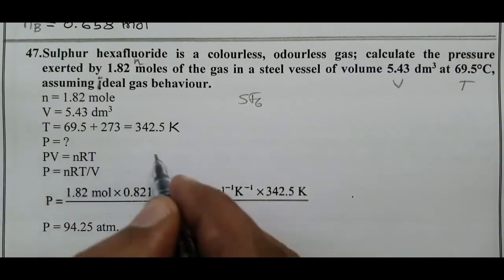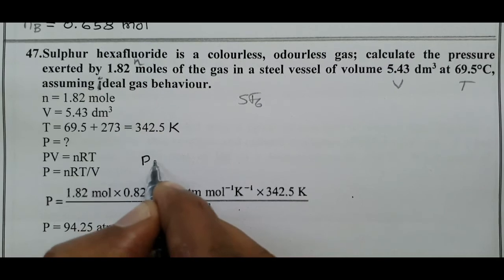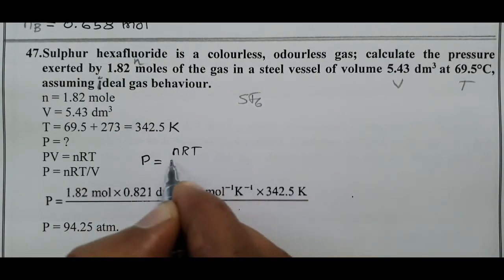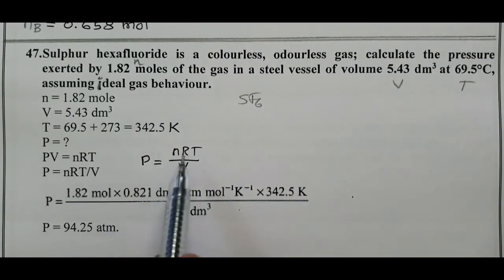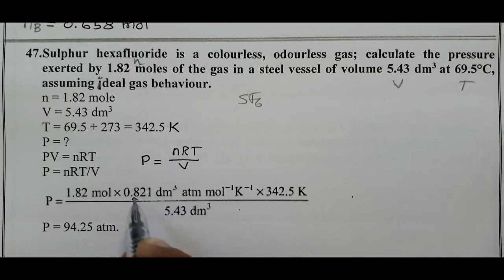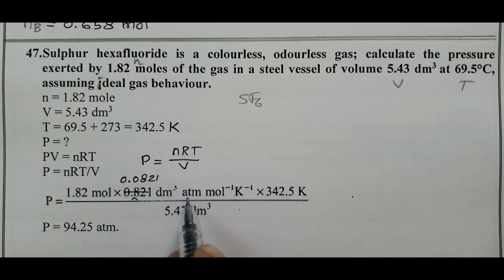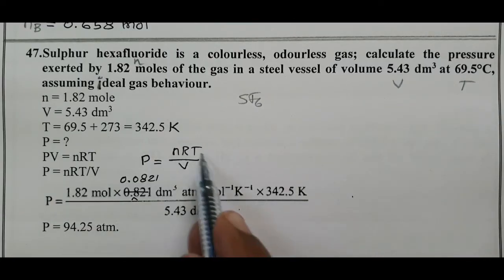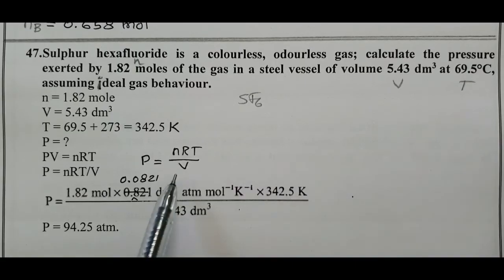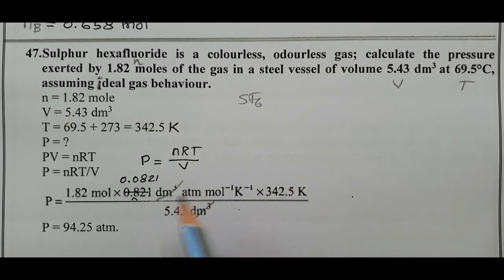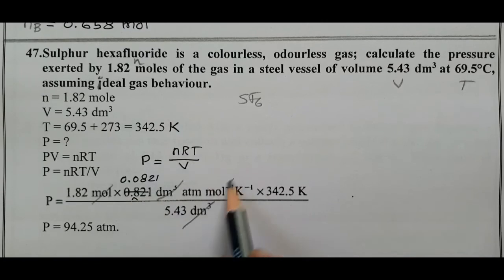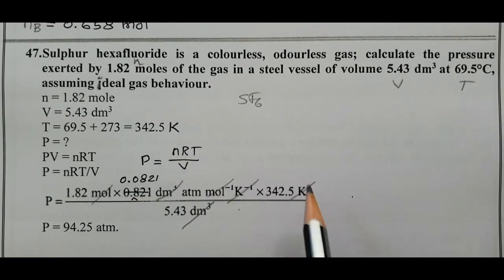Using the ideal gas equation PV = nRT, we need to find P. So P = nRT/V. n = 1.82 moles, R = 0.0821 dm³·atm·mol⁻¹·K⁻¹, T = 342.5 K, V = 5.43 dm³. Units of dm³, mol, and K cancel.